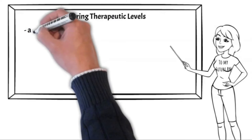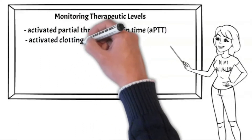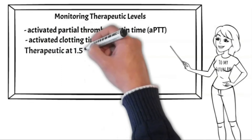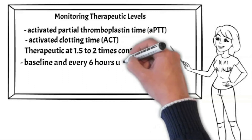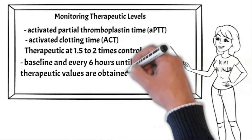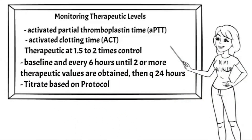We monitor heparin therapy by assessing the activated partial thromboplastin time, aPTT, and activated clotting time, ACT, which are expected to be prolonged during heparin therapy. ACT is less sensitive than aPTT, so we focus on aPTT. An aPTT is drawn at baseline, then every 6 hours until two or more therapeutic values are obtained, then assessed every 24 hours. You titrate the heparin drip based on your aPTT results.